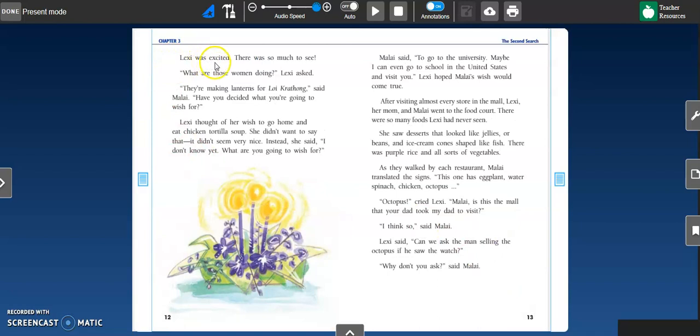Lexi was excited. There was so much to see. What are those women doing? Lexi asked. They're making lanterns for loy krethong, said Malay. Have you decided what you're going to wish for? Lexi thought of her wish to go home and eat chicken tortilla soup. She didn't want to say that. It didn't seem very nice. Instead, she said, I don't know yet. What are you going to wish for?